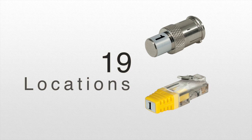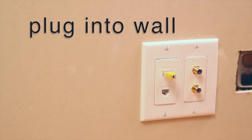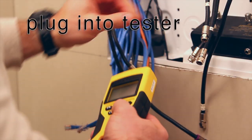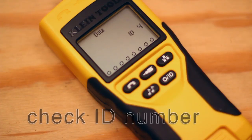They identify cabling runs up to 19 locations. Insert the location IDs into the far end of the cable runs, go to the distribution point and begin identifying each cable, quick and easy.